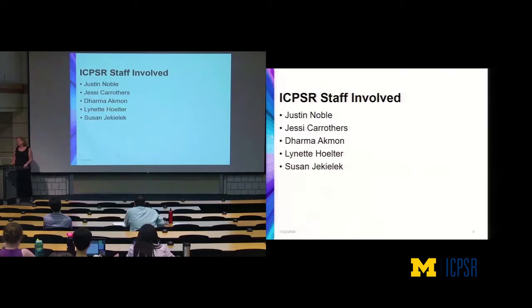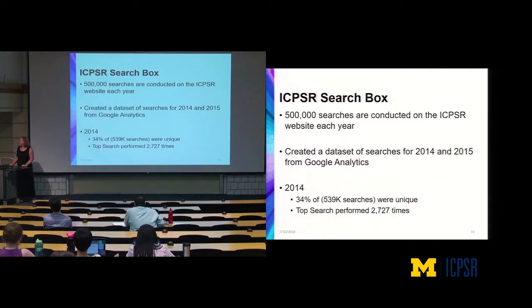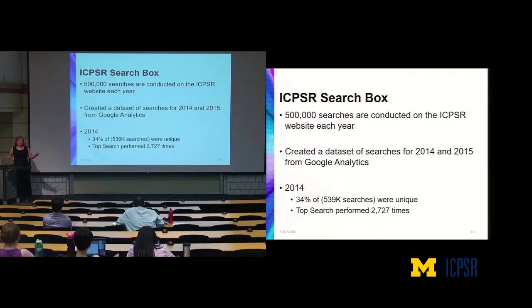We started to ask: what data do users actually want, and more specifically, what do they want that we don't have a lot of already? The data set we worked on was a Google Analytics data set — it comes from the search boxes of ICPSR's website, where over 500,000 searches happen every year of people looking for data sets. We scraped all of that information for both 2014 and 2015 from the Google Analytics reporting. Dharma was part of the group that assembled the data set and some of the analyses and related publications.